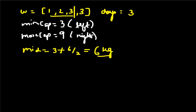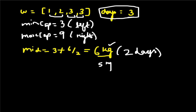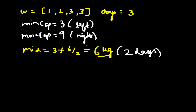We check if it takes 2 days to ship everything with capacity 6 kg. That is a possible answer. Now, since 6 kg works, can we do better? We try 5 kg. With 5 kg, we check if we can still ship within the required days. Since 5 kg also works, we reduce the right side to mid minus 1 and search for a smaller capacity.